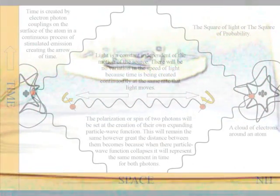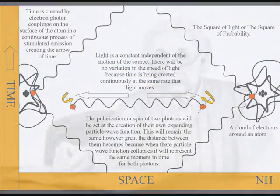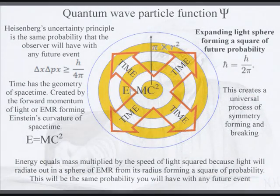Objects form their own space-time geometry, forming a square of probability. Therefore, we have Einstein's famous equation, energy equals mass times the speed of light squared.